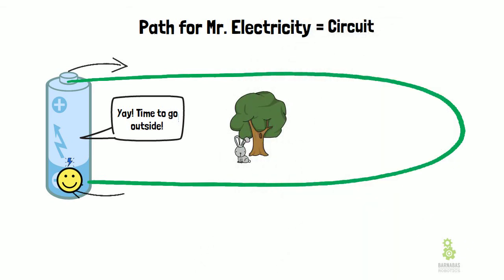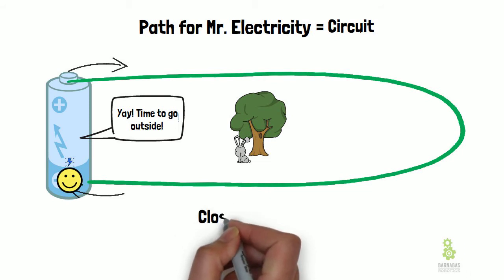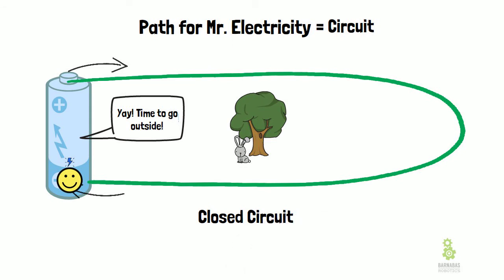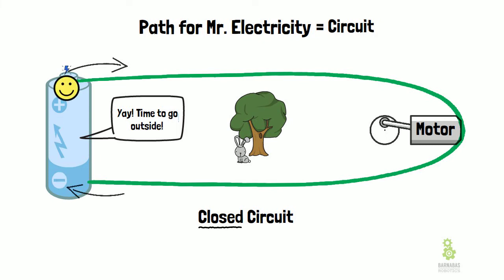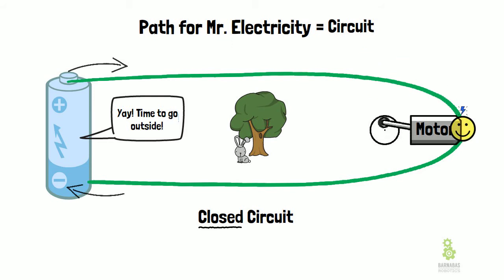That path for Mr. Electricity is called a circuit - a path is called a circuit. It's not just any circuit; it's a special one called a closed circuit, because there is a closed loop. Now if we put an object in the path like a motor and tell Mr. Electricity to go through it, he's actually going to go through the motor and turn it on. That is how we turn things on - we make closed circuits and put things in the path of Mr. Electricity.